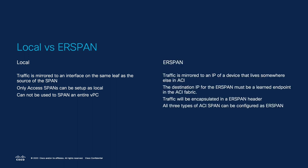For ERSPAN, instead of traffic being mirrored out of an interface on the same switch, the mirrored traffic is forwarded to an IP destination in ACI. This is an endpoint that can be connected anywhere within your ACI fabric, but the destination must be IP-learned. In ERSPAN, the traffic gets encapsulated in a GRE header before it is sent towards your SPAN destination, and all SPAN types in ACI can be set up as ERSPAN.